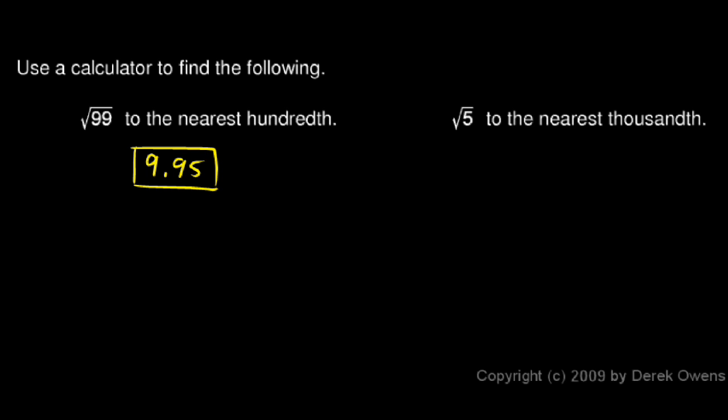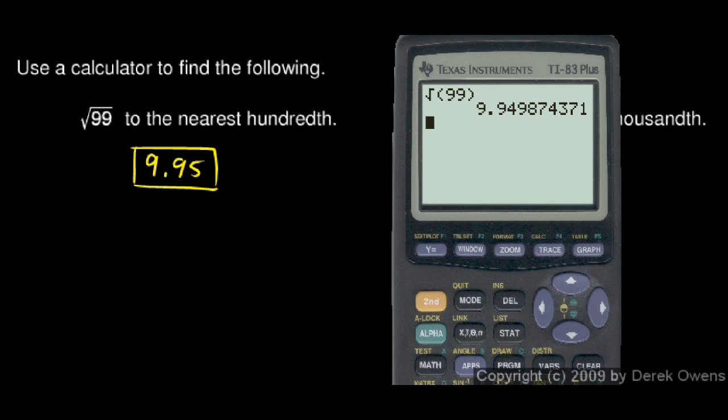And we're told to find the square root of 5 to the nearest thousandth, again using the calculator. So we just type in square root of 5.